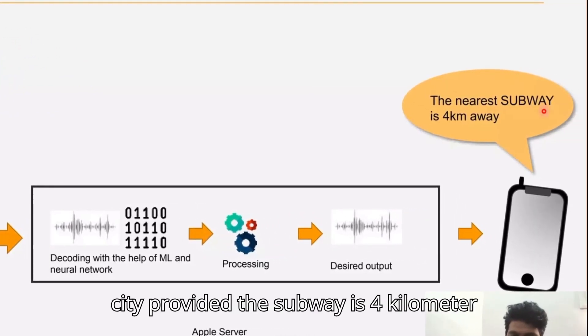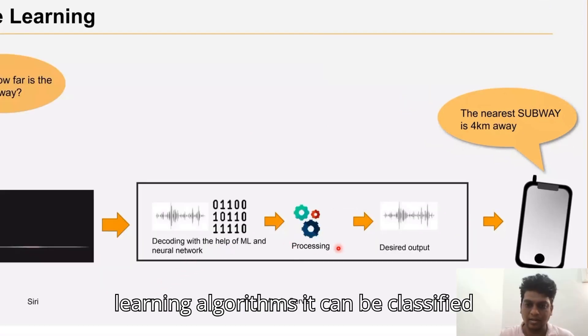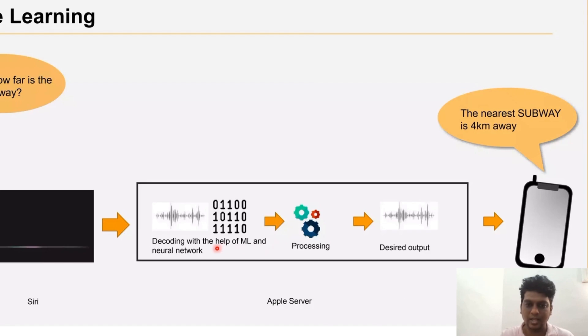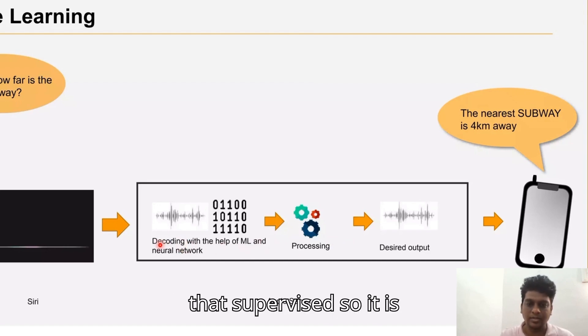Siri provided that the subway is four kilometers away from the current location. This is how artificial intelligence works normally. Machine learning algorithms can be classified into two main categories: supervised and unsupervised. Supervised is trained with labeled data.